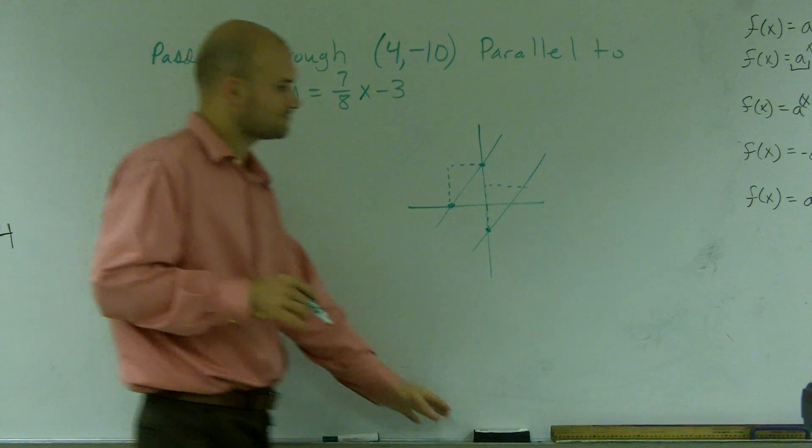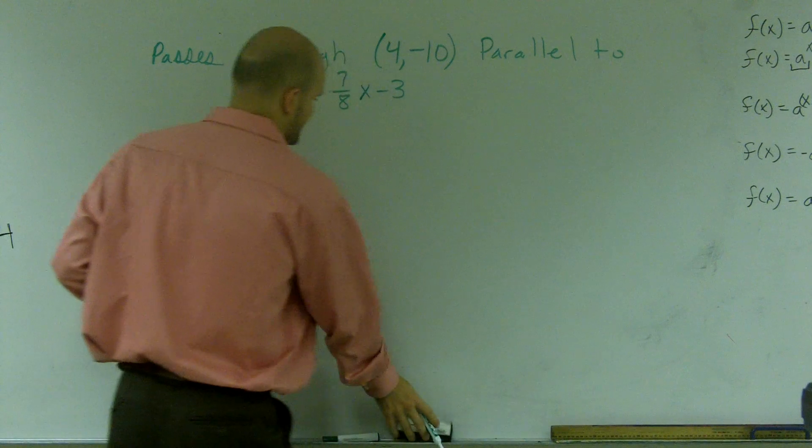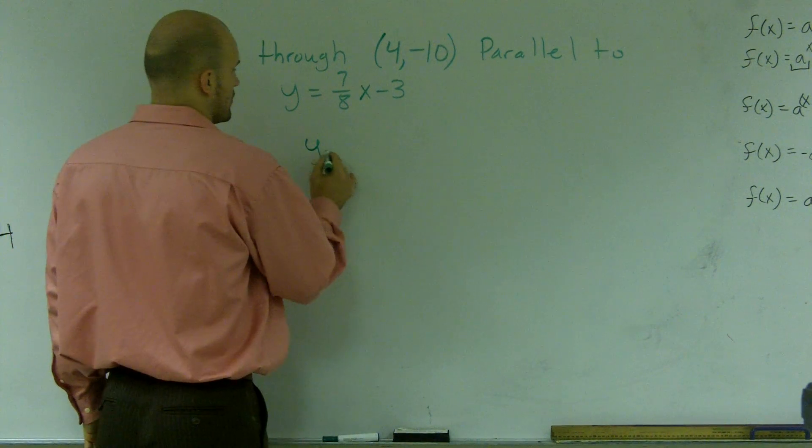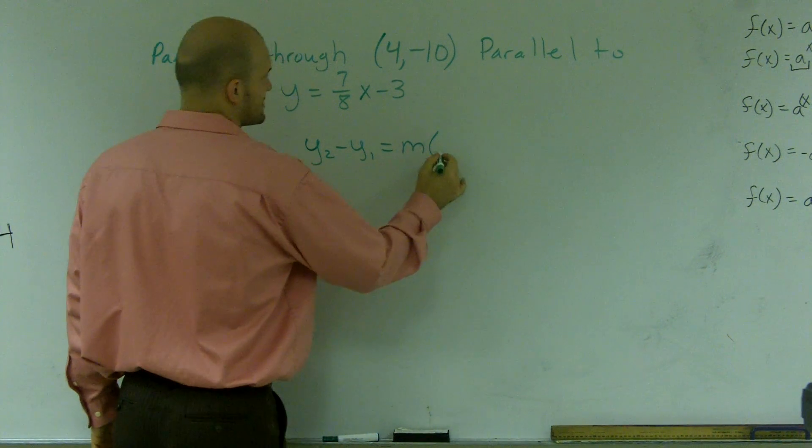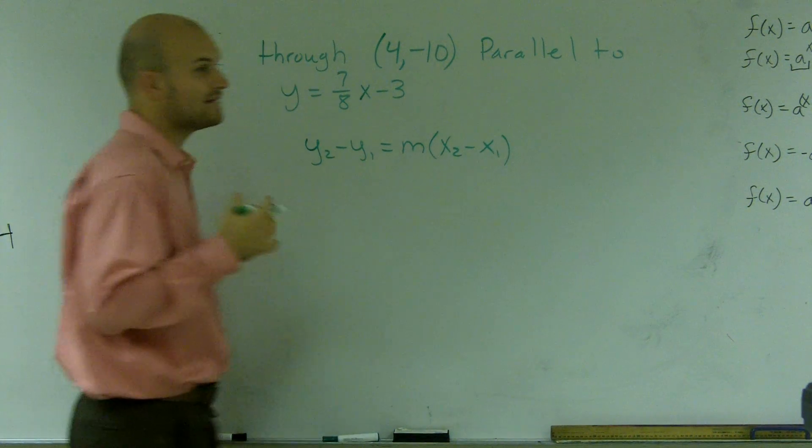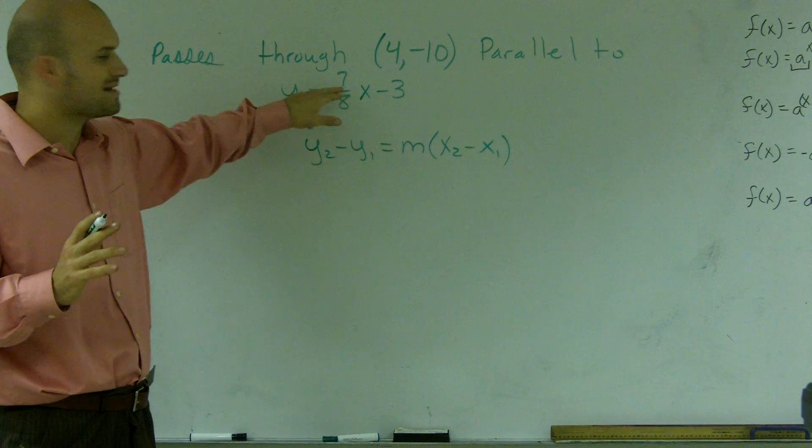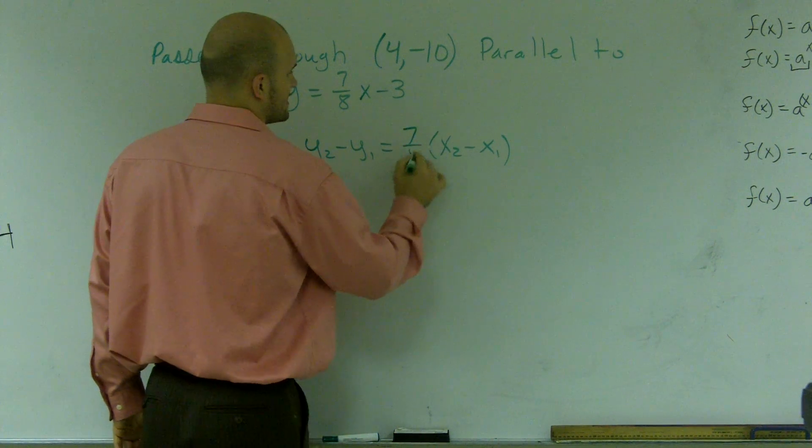So if I want to find a new equation, what I'm going to do is use the fact that my slope is going to be exactly the same. So the way I'm going to solve this problem is by using point-slope form, which is y2 minus y1 equals m times x2 minus x1. Now I want to find a new equation, so I need to find a new slope. Well, my slope, as we know, is going to be the same, 7/8.